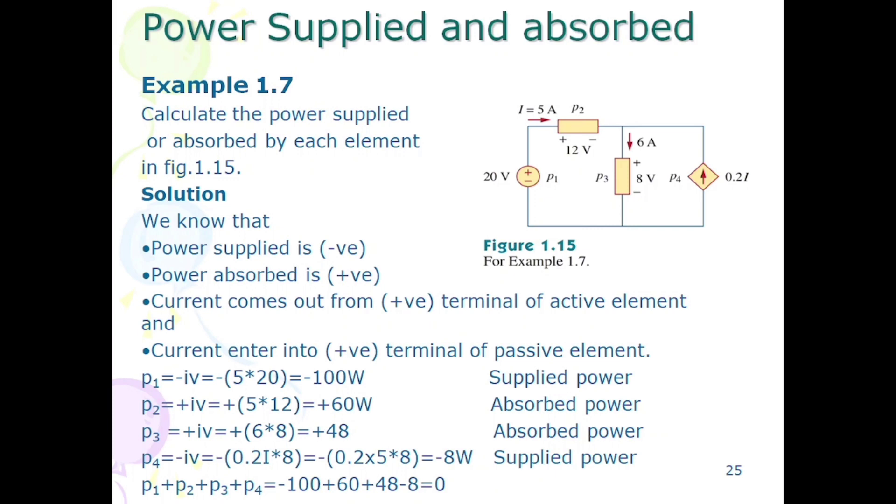Now come toward the p3. Here in p3, power is absorbed because it is passive element and power is absorbing. Power is equal to plus v into i and current is also entering the positive terminal, so 6 into 8 is equal to 48, plus 48.